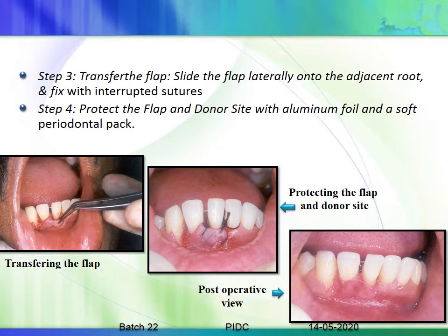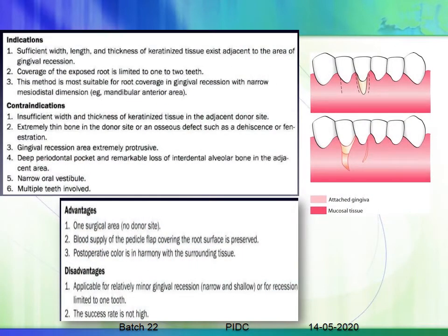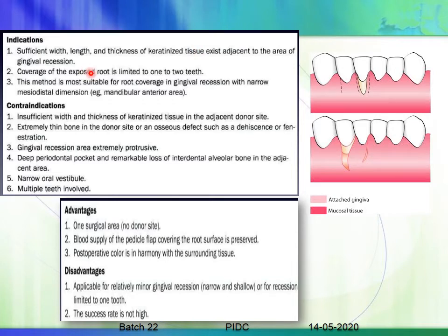For a single-rooted tooth with minimal mesiodistal dimension, the lateral displaced flap is best, provided it has a good amount of keratinized tissue. After making an incision, you simply slide it over the area and suture it back. Main indications: sufficient keratinized tissue adjacent to the gingival recession area; coverage limited to one or two teeth; and narrow mesiodistal dimension such as mandibular anteriors.